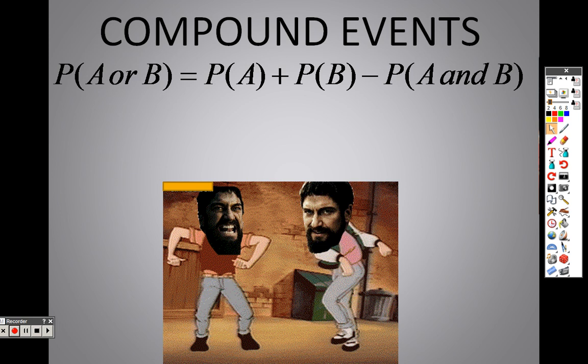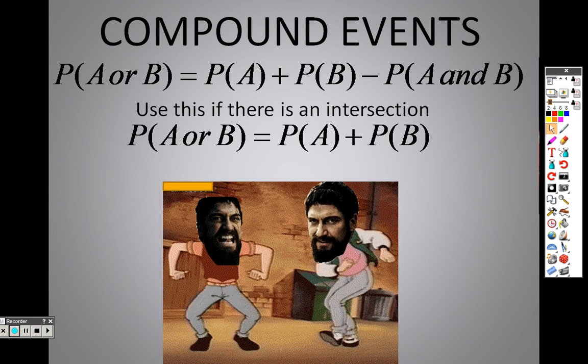The point is that A and B means you need to take out what's in common. What do they both share in common? They both have an ace of diamonds. So you need to take one item out.